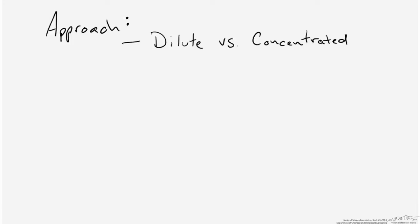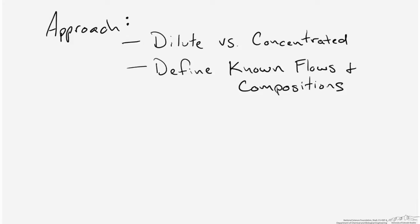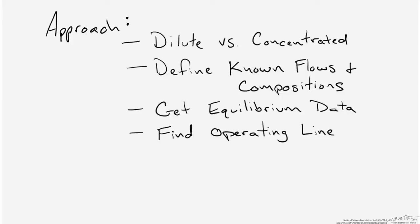Our overall approach to solving this problem is broken down as follows. First we're going to look at this system and determine whether it's dilute or concentrated. The next step would be to define the known flows and compositions for this system. Then we're going to get the equilibrium data appropriate for this problem, and finally we're going to find the operating line and step off the stages.